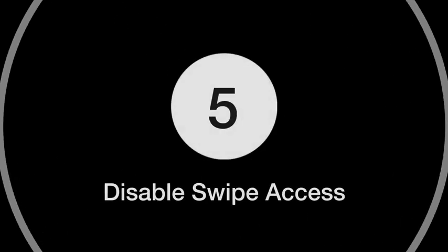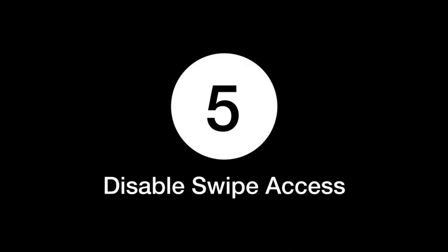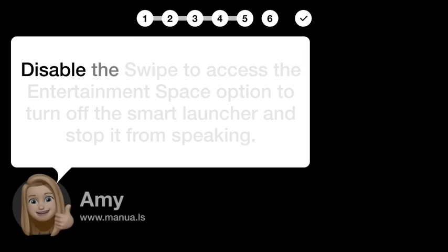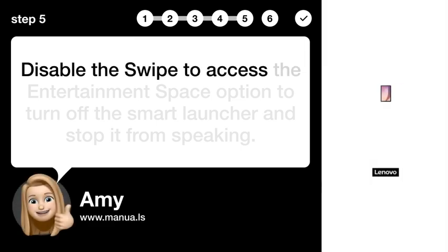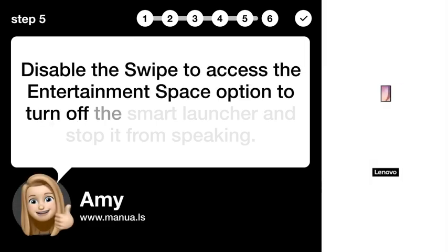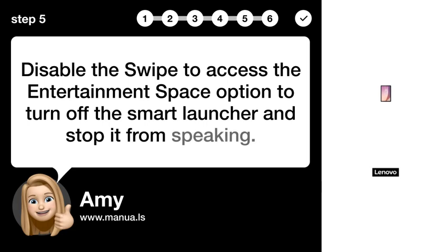Step 5: Disable swipe access. Disable the swipe to access the entertainment space option to turn off the smart launcher and stop it from speaking.